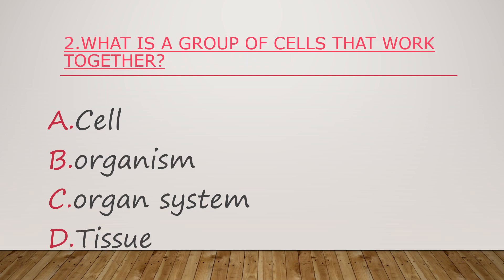Number two. What is a group of cells that works together? A. Cell. B. Organism. C. Organ System. D. Tissue.